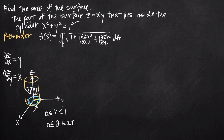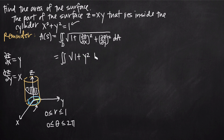Now let's start plugging things into our formula. The area of the surface S equals the double integral of the square root of 1 plus the partial derivative of z with respect to x squared, which gives us y squared, plus the partial derivative of z with respect to y squared, which gives us x squared, and then dA.